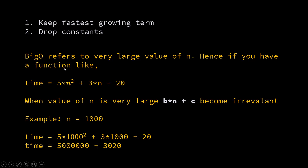So 3020 is very minor against 5 million value, hence it can be dropped. Big O is a simplistic method of saying this is how much my program is going to take. Hence it makes sense that you only keep the fastest growing term and drop everything else.